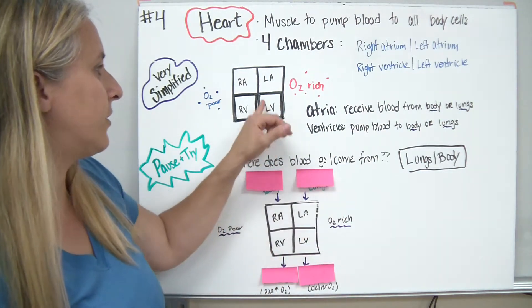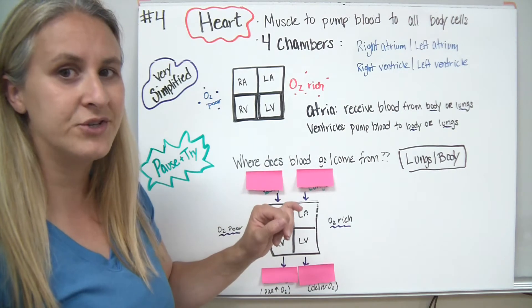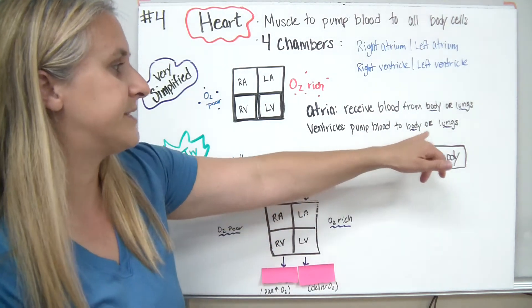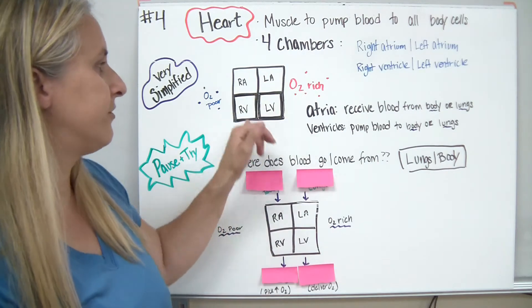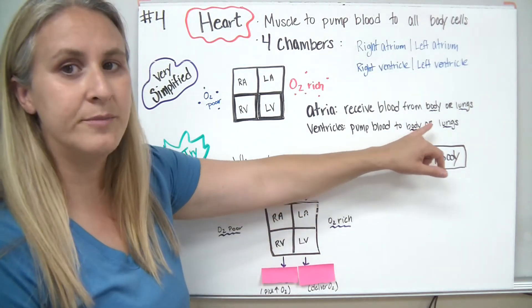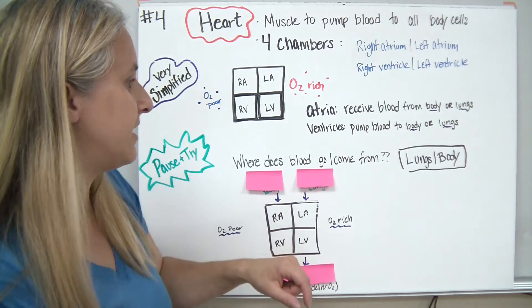The ventricles, being the lower chambers, are connected to the atria, and they pump blood to the body or to the lungs. So they're going to receive blood from the atria, and they're going to pump the blood either to the body or the lungs, depending on which side.